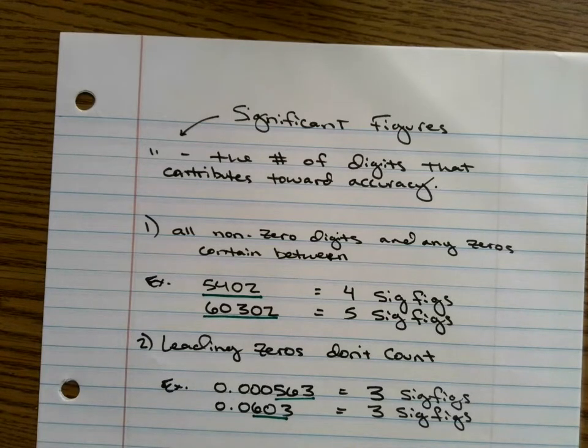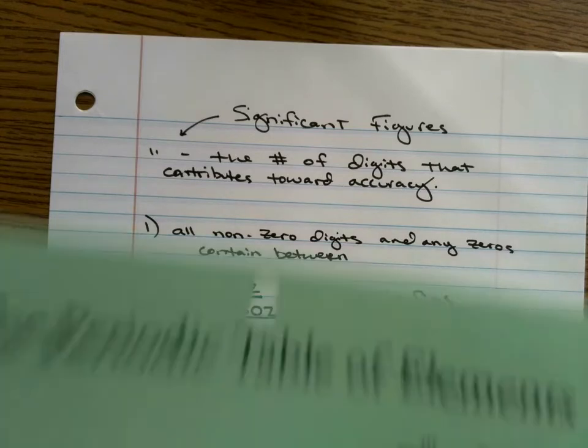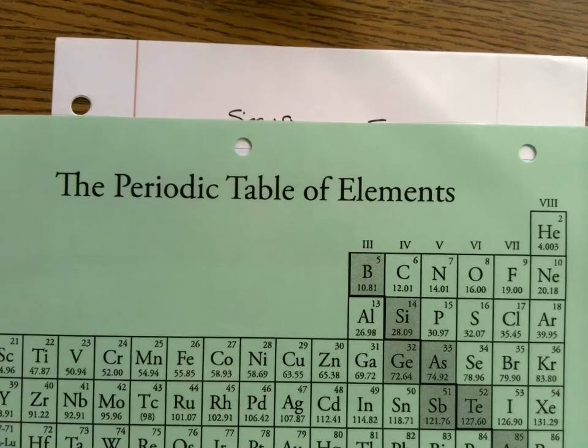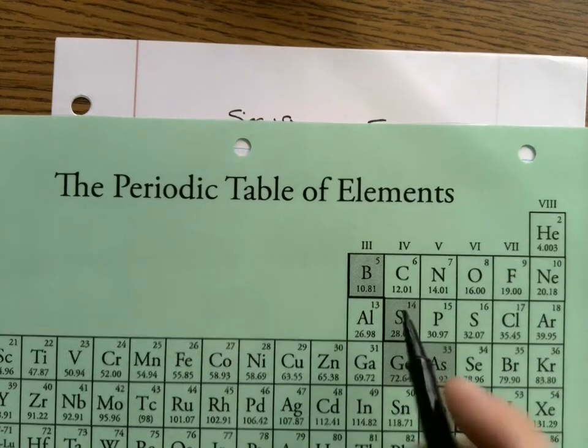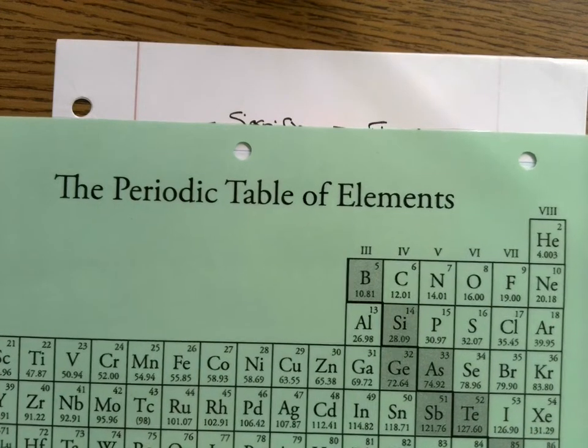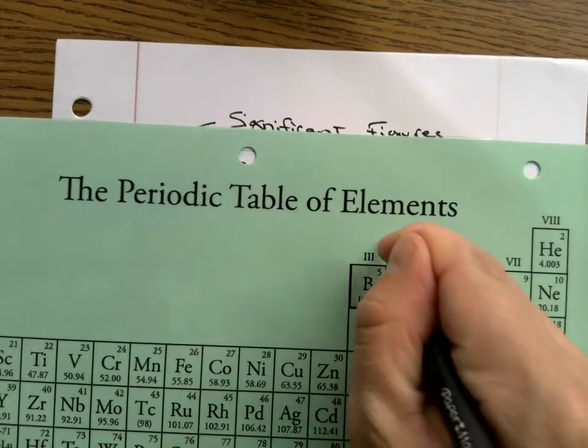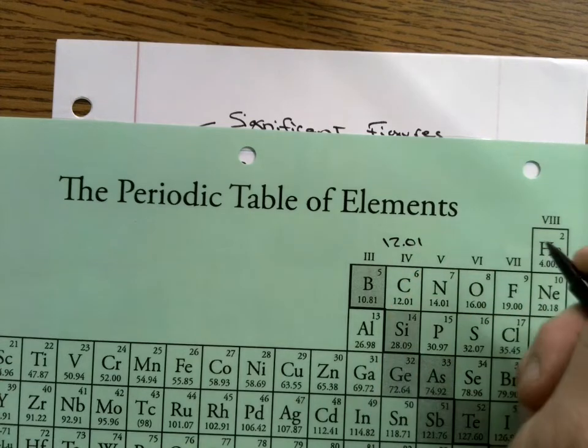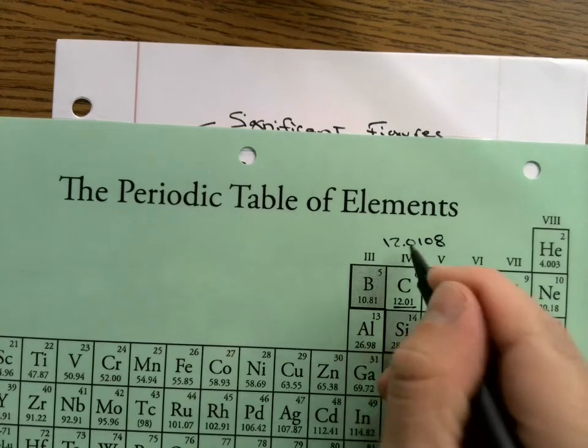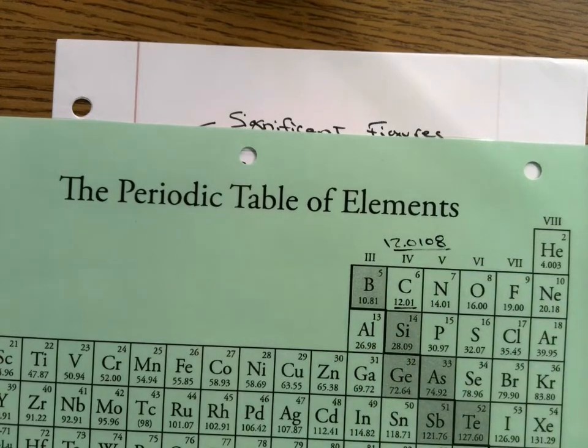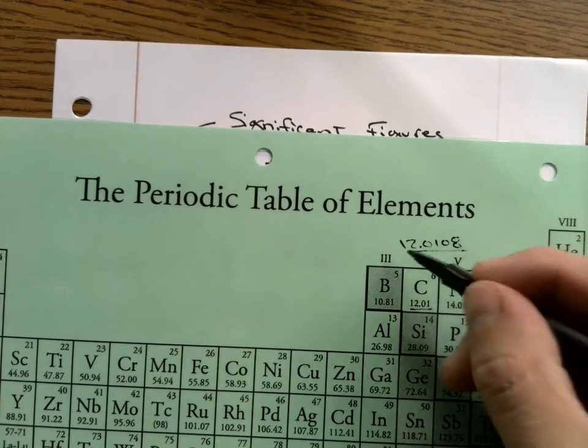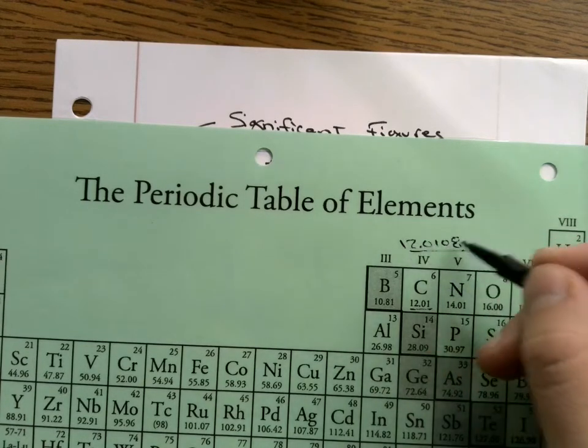Like, for example, if I were to look at this periodic table, this one is not as accurate as the one on my wall. So carbon on this table is 12.01. But if I look up on my wall, it's 12.0108. If you look at these two numbers, which one's more accurate? Which one has more information? The one on my wall does. It has a much bigger number. It's got more significant figures.